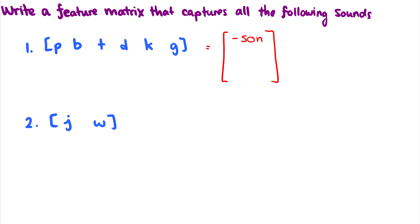So minus sonorant, I'm now left with stops, fricatives, and affricates. But I want just the stops. So maybe I should put minus continuant in there. Because these are all full closures. So minus sonorant and minus continuant. Now with minus continuant, what don't I have? I don't have fricatives anymore. What about affricates? Do I have affricates? I still have affricates.